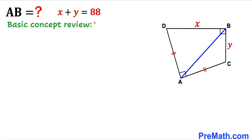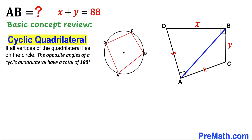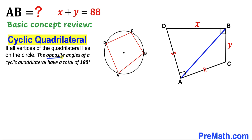Before we proceed, let's go over the basic concept. Let's recall the cyclic quadrilateral: if all the vertices of a quadrilateral lie on a circle, then it is called a cyclic quadrilateral. In this diagram, quadrilateral vertices A, B, C, and D all lie on the same circle. Furthermore, the opposite angles of a cyclic quadrilateral sum to 180 degrees.